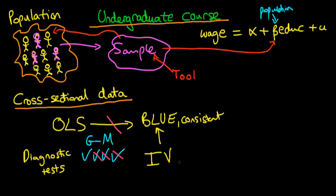These alternative estimators may not be BLUE but may possess other good properties, such as consistency, and under less restrictive assumptions they may happen to be BLUE or consistent. Some of the estimators we're going to discuss are instrumental variables estimation, GLS estimators, and maximum likelihood estimators; we may also talk a little about GMM but we'll keep that to a minimum. I should also mention that I'm going to try to make this course as non-mathematical as possible — wherever I can avoid using maths I will, and where I do use it, you don't necessarily need to follow those videos if you're just looking for the intuition behind the theory.